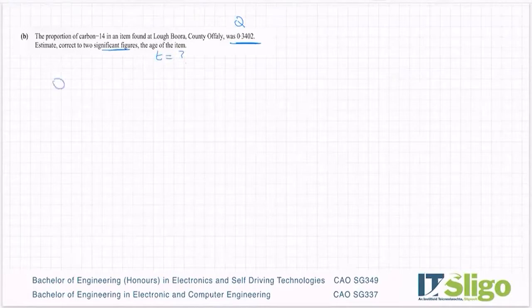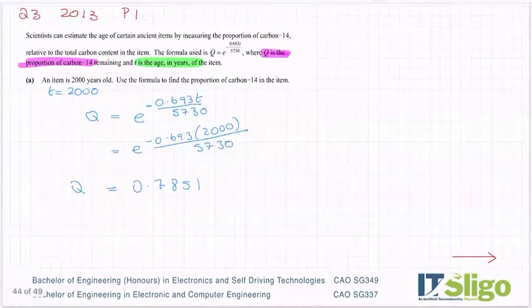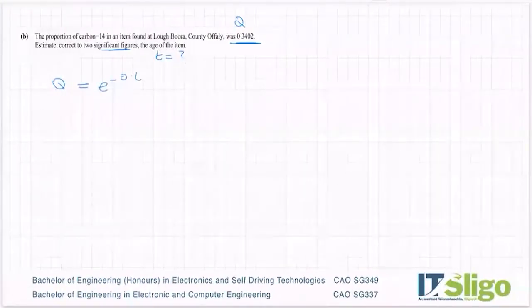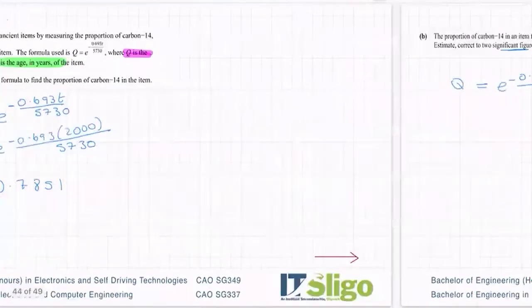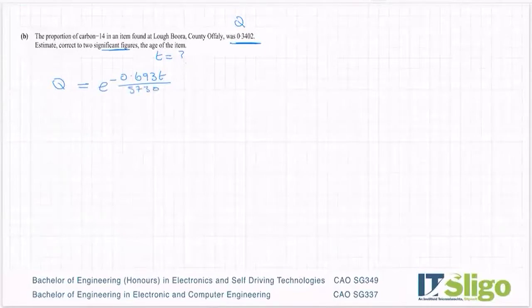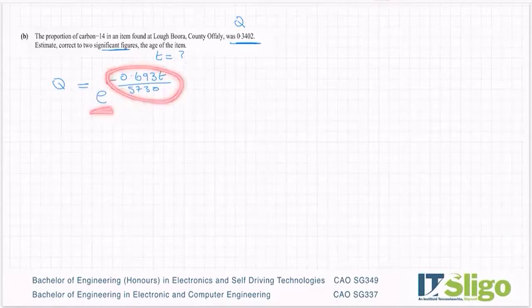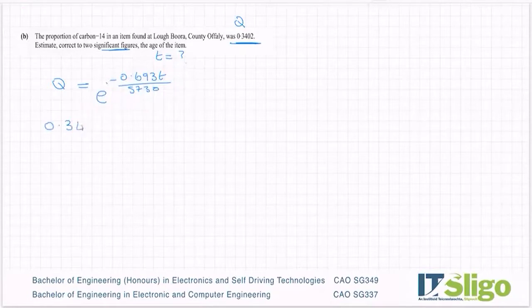Just like before, take down the formula. So Q equals e to the minus 0.693T over 5730. I'm just going to delete out that little e because everything here is in the power of that e. So let's put in the 0.3402 and that's equal to e to the minus 0.693T over 5730.